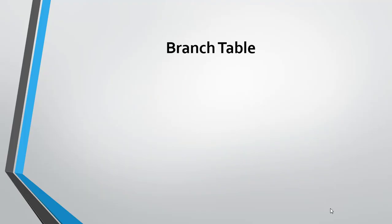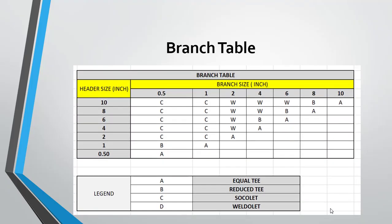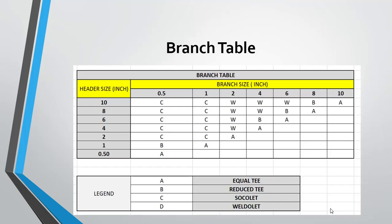The second area is branch table. A branch table is a table that indicates the type of fitting to be used for taking branches. For example, for a header size of 10 inch and a branch size of 10 inch, an equal tee shall be used based on the legend given. For different sizes, different fittings are identified based on the table. So the selection of fittings for taking branches must comply with this table.